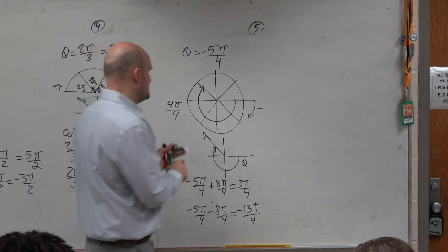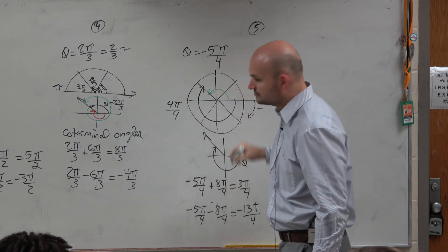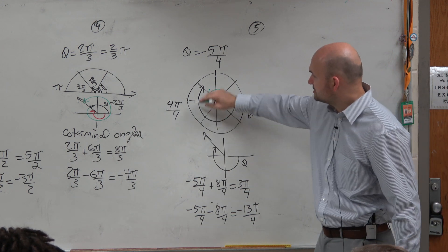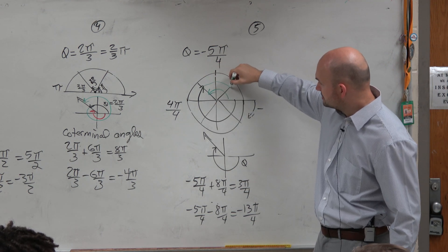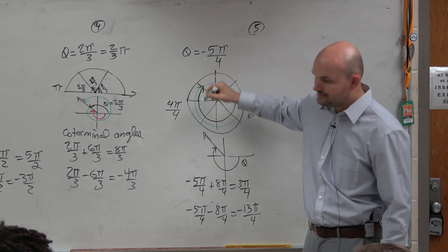And let's just kind of confirm that. Does this look like 3 pi over 4? 1, 2, 3. Right? What about this one? This one's 5. And if I did a whole revolution again, 6, 7, 8, 9, 10, 11, 12, 13.